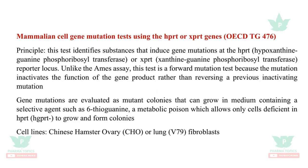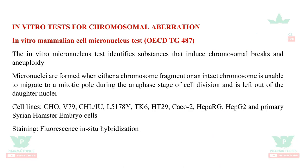The next is the mammalian cell mutation test using HPRT or XPRT genes. The cell lines used are Chinese hamster ovary (CHO) or lung V79 fibroblasts. Unlike the Ames assay, this is a forward mutation test because the mutation inactivates the function of the gene rather than reversing it — the mutated cells will not grow.